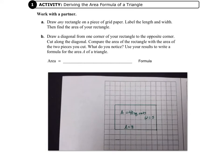The next step is to draw a diagonal from one corner of the rectangle to the opposite corner. It doesn't say to cut out the rectangle, but you do have to cut along the diagonal. Compare the area of the rectangle with the area of the two pieces you cut.